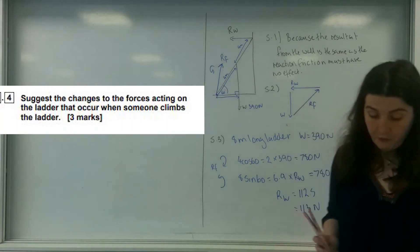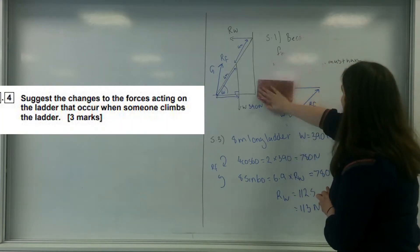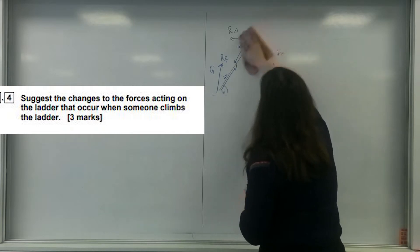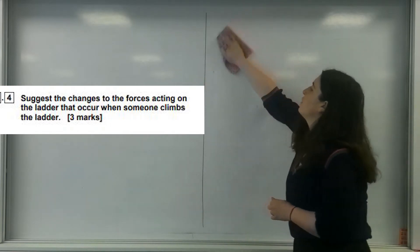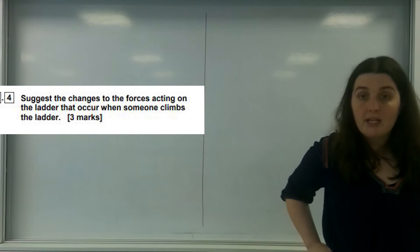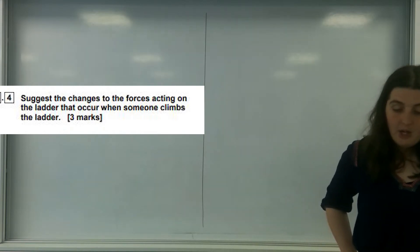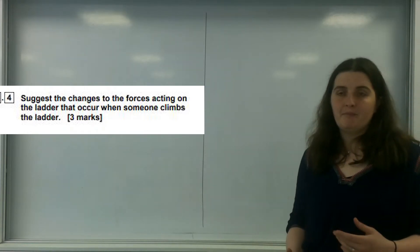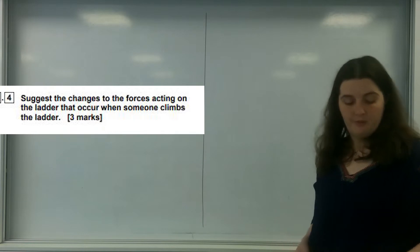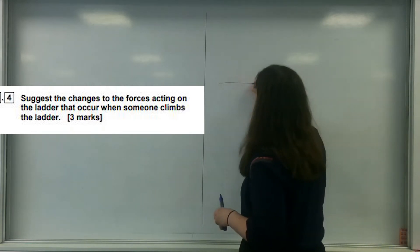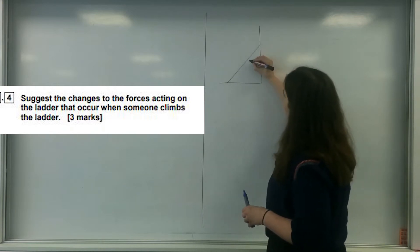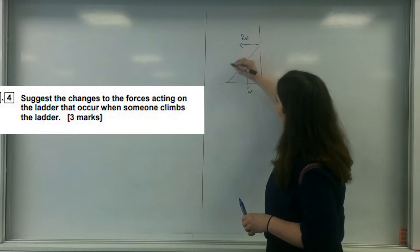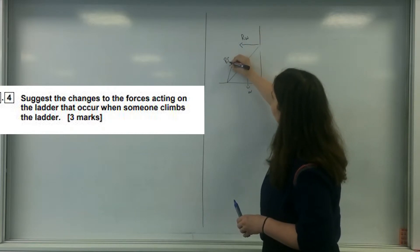So let's move on to 5.4, which is a three-marker. It's a three-mark written question asking: what happens if you start walking up the slope? Suggest the changes to the forces acting when somebody climbs the ladder. So I've got my weight, I've got my resultant from the wall, and I've got a resultant from the floor.